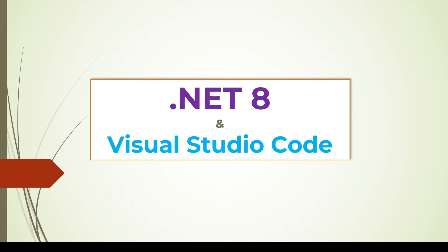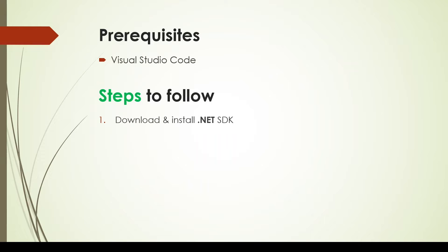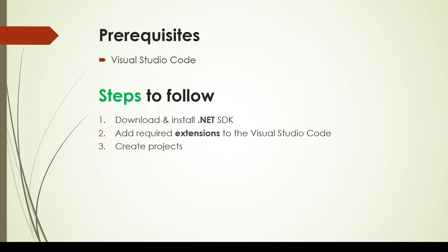Hi, in this video we will see how we can set up .NET 8 with Visual Studio Code. For this video, I am assuming that you already have Visual Studio Code. The first step is to download and install the .NET SDK. The second step is to add extensions to Visual Studio Code. And the last step is to create projects.